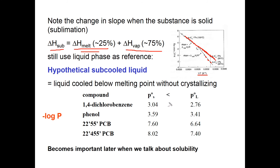The hypothetical sub-cooled liquid vapor pressure is always going to be greater than the real vapor pressure of the solid. The numbers on this plot may look confusing because this is plotted as minus log P — so a larger number actually means a smaller vapor pressure. This concept of the hypothetical sub-cooled liquid vapor pressure is an important one, and we'll revisit it several times in the course, especially when we start talking about the solubility of compounds in water.